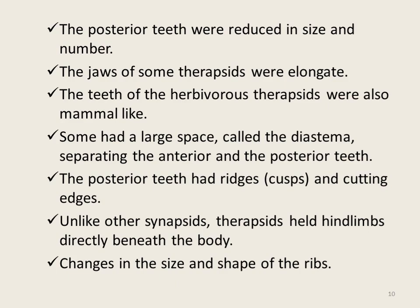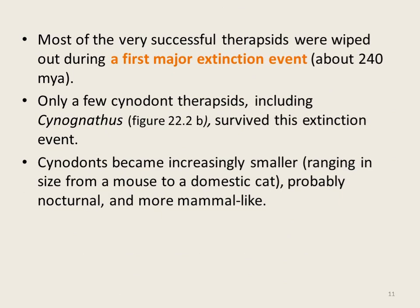Therapsids also showed changes in limb posture — while forelimbs were sprawling, the hind limbs were held just beneath the body and moved parallel to the body axis. They also showed changes in the size and shape of their ribs. With these successful adaptations, therapsids survived the first mass extinction event about 240 million years ago, possibly caused by huge Siberian volcanic events. Only a few cynodont therapsids survived and began adapting, diversifying, and evolving according to available resources.